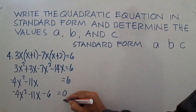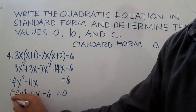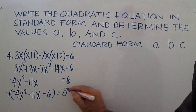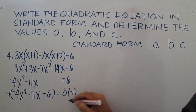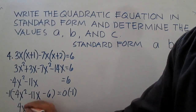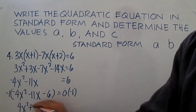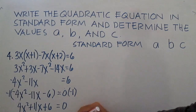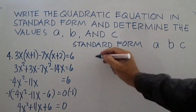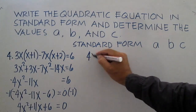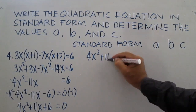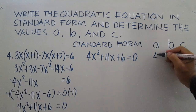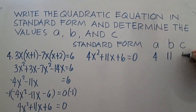Multiply both sides of the equation by negative 1. The result is 4x squared plus 11x plus 6 equals 0. The standard form is 4x squared plus 11x plus 6 equals 0. A is 4, b is 11, c is 6.